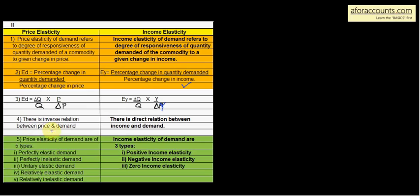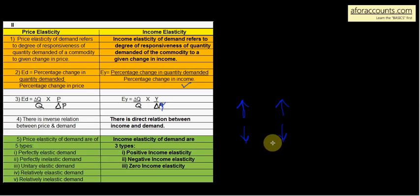There is an inverse relationship between price and demand. Price and demand have an opposite relation — when price falls, demand rises, and when price rises, demand falls. That is the inverse relationship. There is a direct relationship between income and demand. When income increases, demand also increases; when income decreases, demand also decreases. So income and demand have a direct relationship, while price elasticity has an inverse relationship between demand and price.